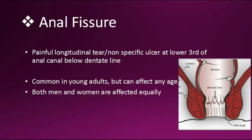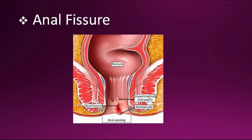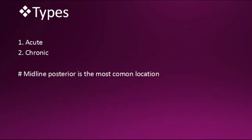Here you can see a picture of anal fissure and the tear types. There are two types: acute anal fissure and chronic anal fissure. The midline posterior is the most common location.